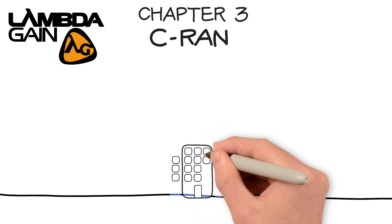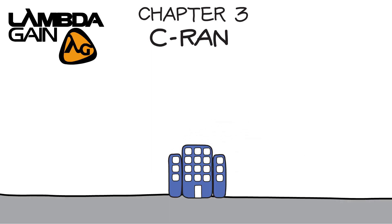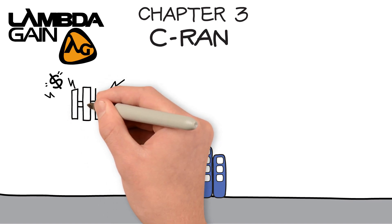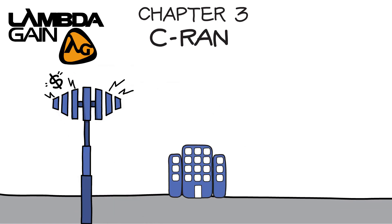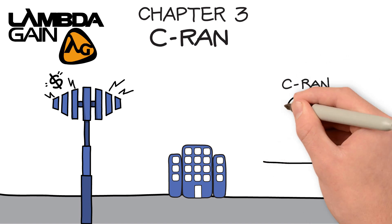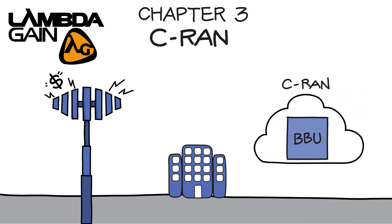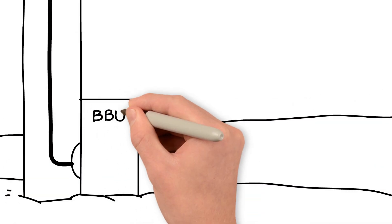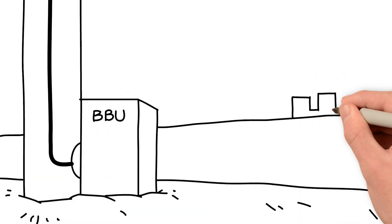As seen in the last chapter, D-RAN networks have issues with cost, wasted capacity, and inefficiency. For this reason, telecom companies have been looking for alternatives that can satisfy the increasing data demand. One of the most promising answers is the Centralized Radio Access Network, or C-RAN. The main difference between C-RAN and D-RAN is in how the baseband units are configured.